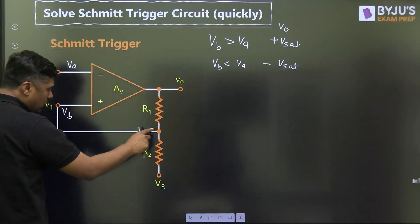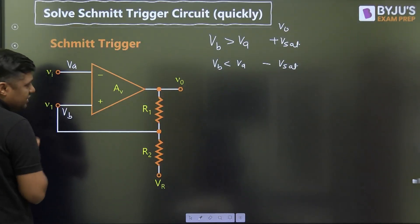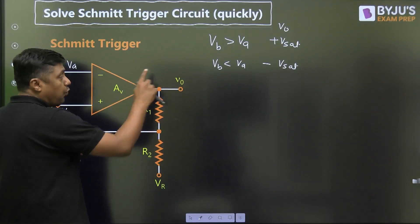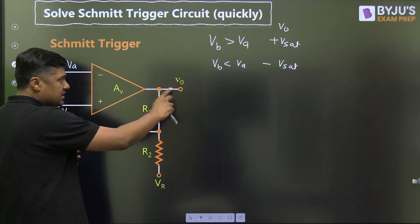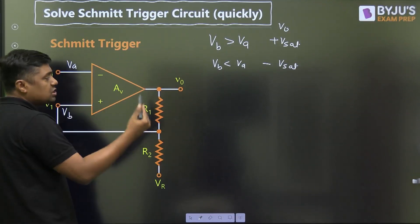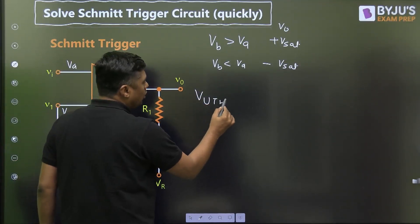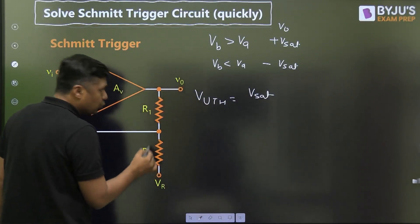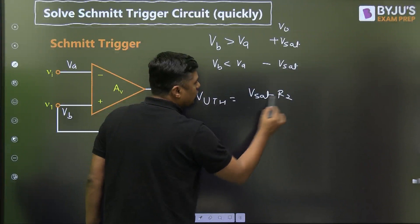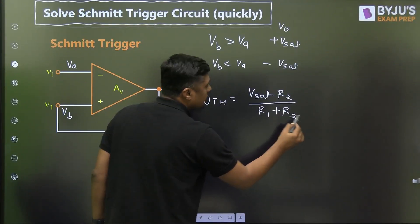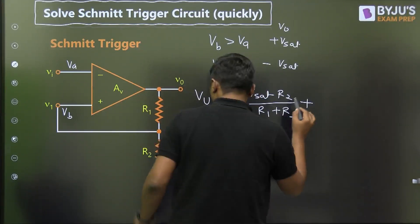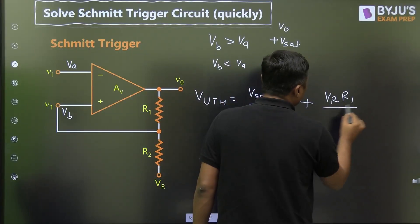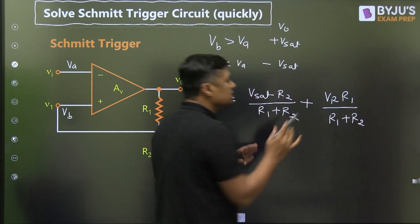Then you can find the voltage at these points — these are called threshold voltages. There are two threshold voltages: one for V0 equal to plus V-sat and one for V0 equal to minus V-sat. The upper threshold voltage is equal to V-sat multiplied by R2, by the voltage division rule, divided by R1 plus R2, plus VR multiplied by R1 divided by R1 plus R2. This is called the upper threshold.